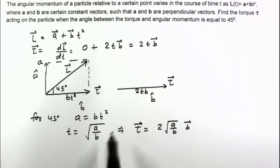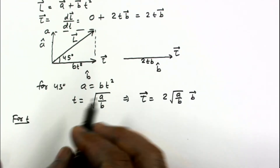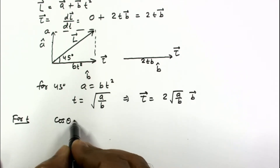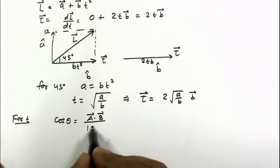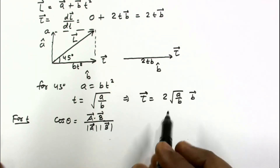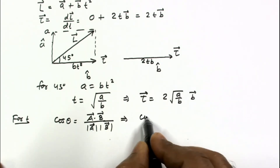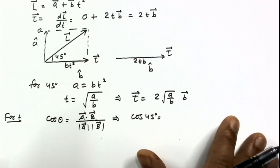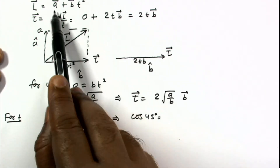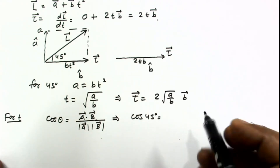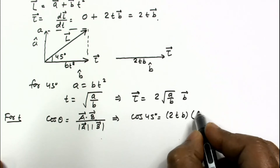We can also use a different method to find the time. We know that if the angle between two vectors is theta, then cos θ = (a · b) / (|a| |b|). Here one vector is the angular momentum l and the other is the torque. Taking the dot product — a dot b is 0 since they are perpendicular — and b dot b is the magnitude of b squared, giving 2tb·bt² = 2tb³t².